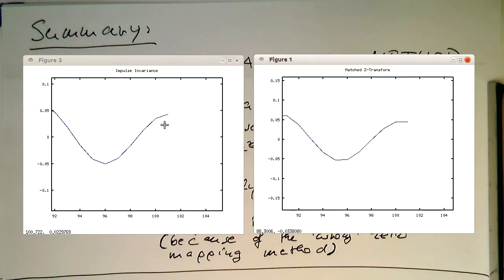At the endpoint at sample 101, in the matched Z-Transform this has already reached its plateau, whereas in the impulse invariance it's already rising. Therefore, there seems to be a slight phase shift, maybe of one or two samples. But in real applications, this usually won't matter.